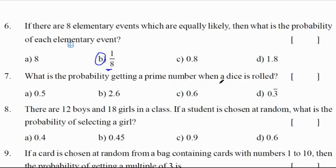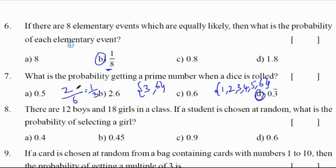What is the probability of getting a prime number when a dice is thrown? When a dice is thrown, possible outcomes are 1, 2, 3, 4, 5, 6. Prime numbers are 2, 3, and 5 - that's 3 numbers. So 3/6 = 1/2, which is 0.5. Wait, 2/6 = 1/3 = 0.3 bar. Correct option is D.